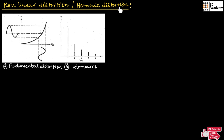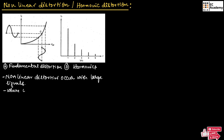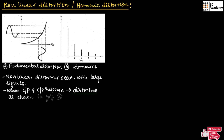which is also known as harmonic distortion. A non-linear distortion will occur with large signals, where the input signal and output response become distorted, as shown in figure A.